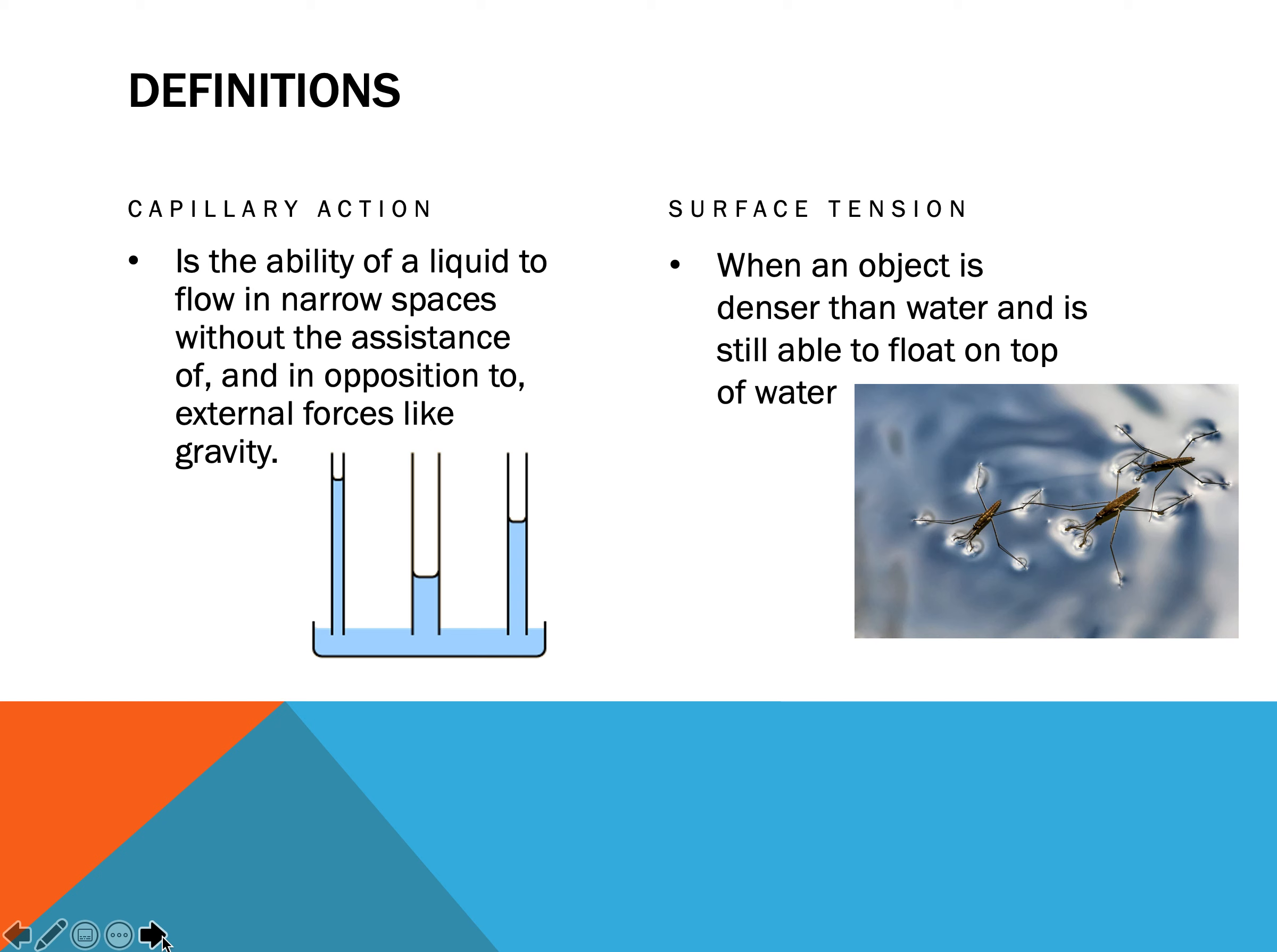Now, capillary action is the ability of a liquid to flow in narrow spaces in the opposite direction of forces like gravity. So if you put a piece of paper towel standing straight up on a big pile of water, it is going to travel up the paper towel against the force of gravity. That is because of capillary action. And then we have surface tension. When an object is denser than water and is still able to float on top of water. So bugs can do that, or sometimes you can get a paper clip to float on top of water. That is because of surface tension.